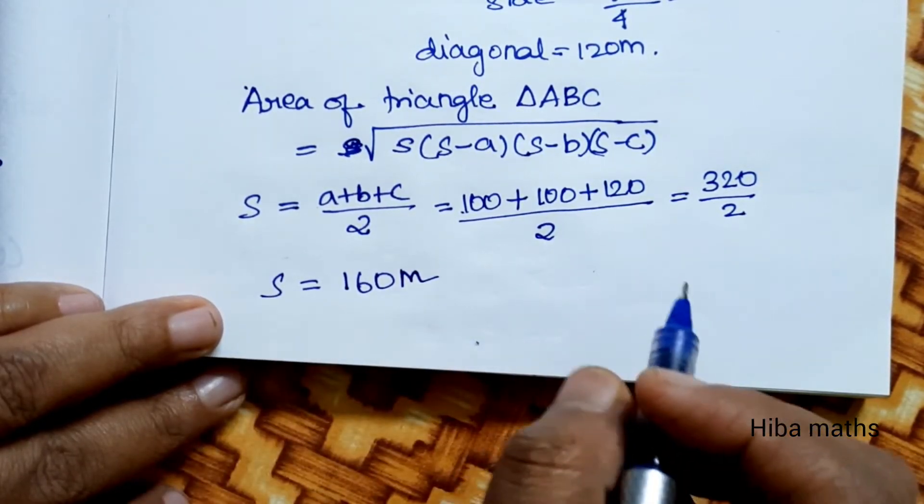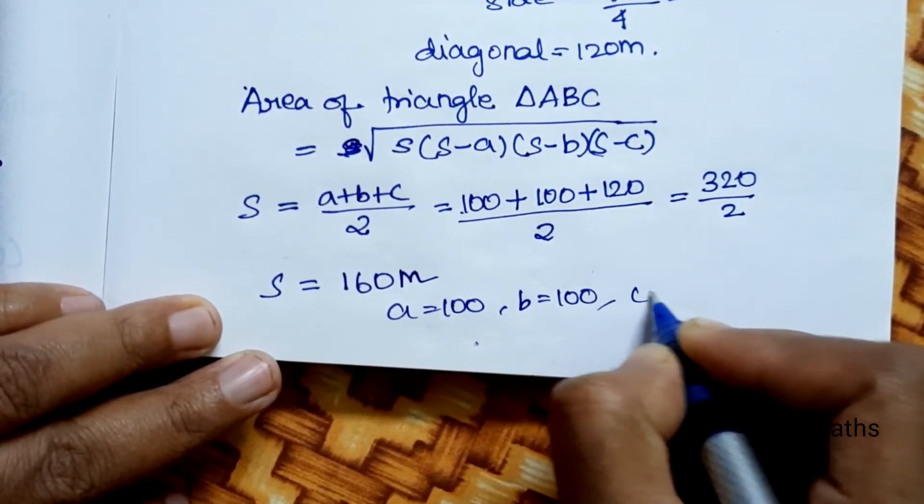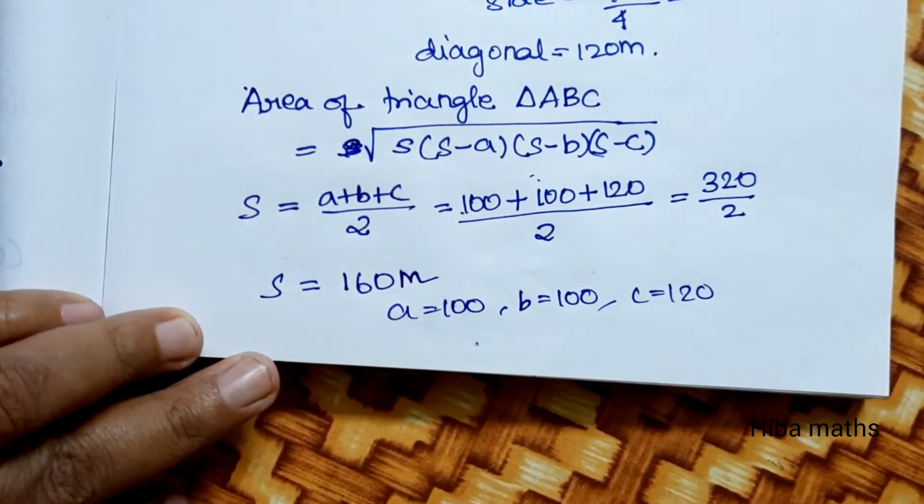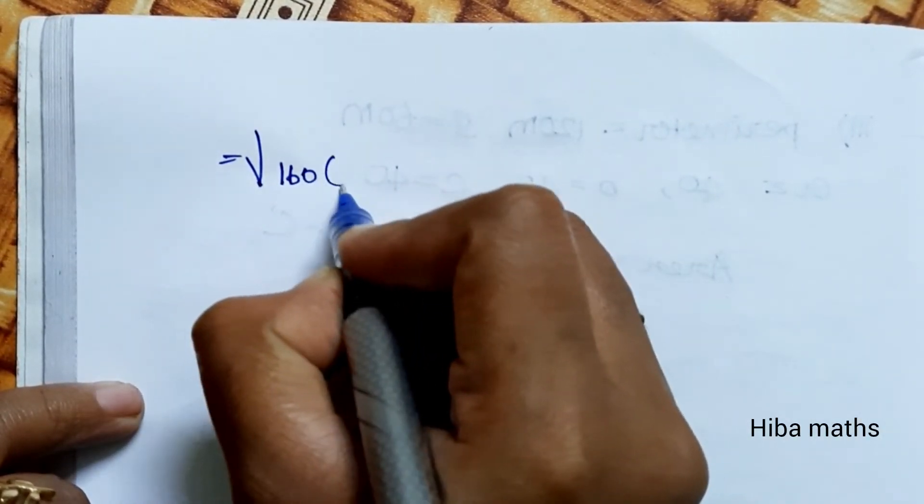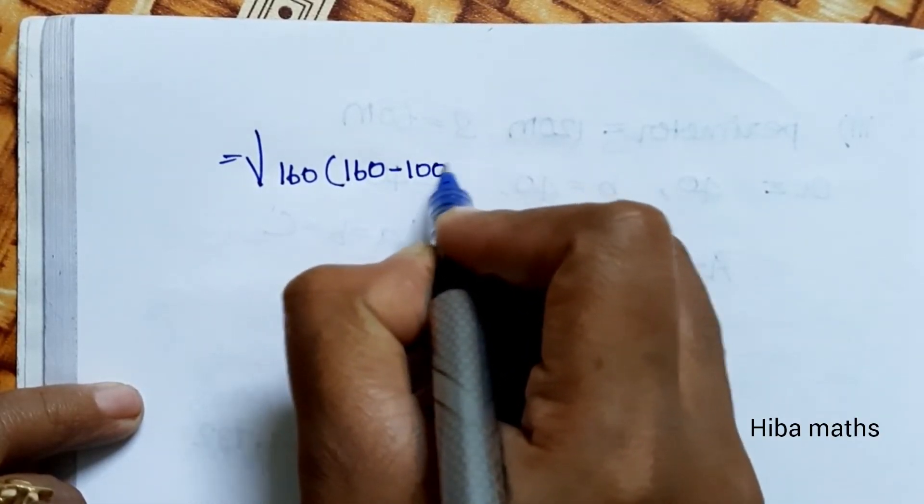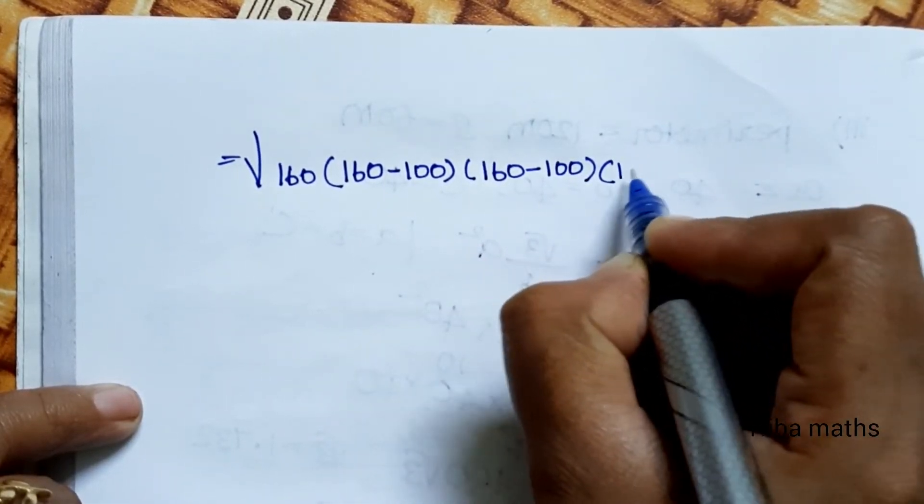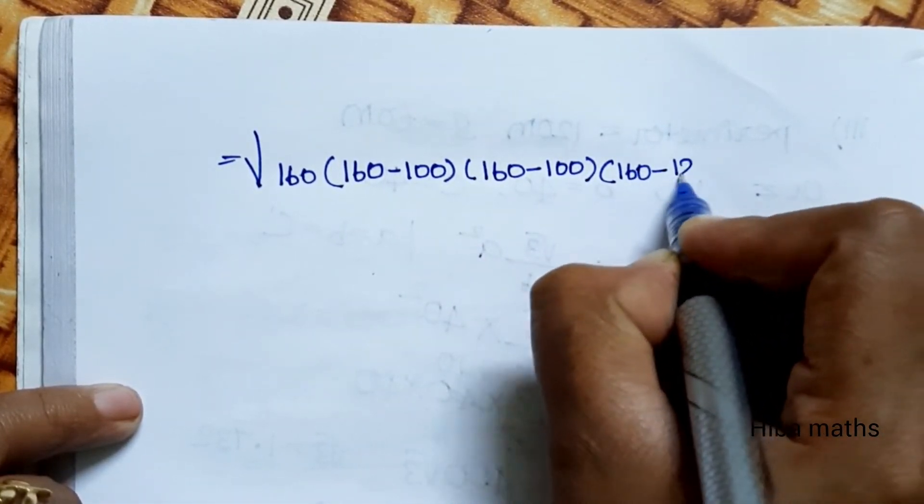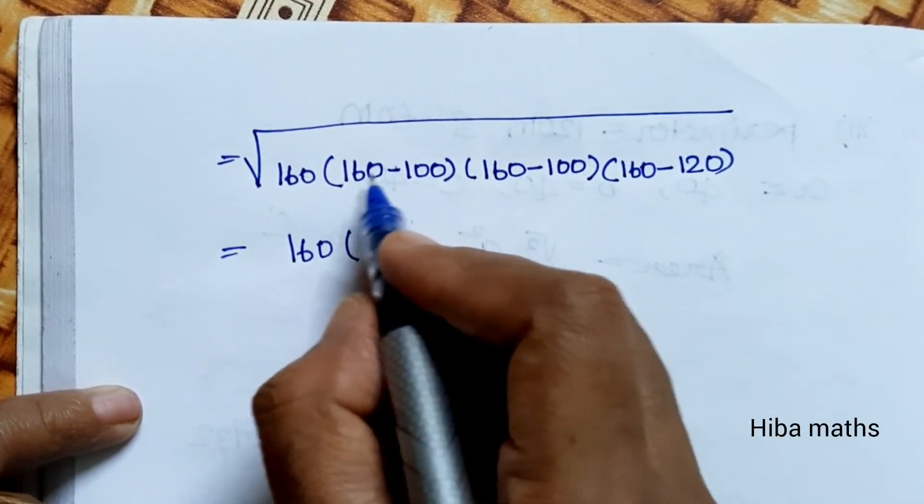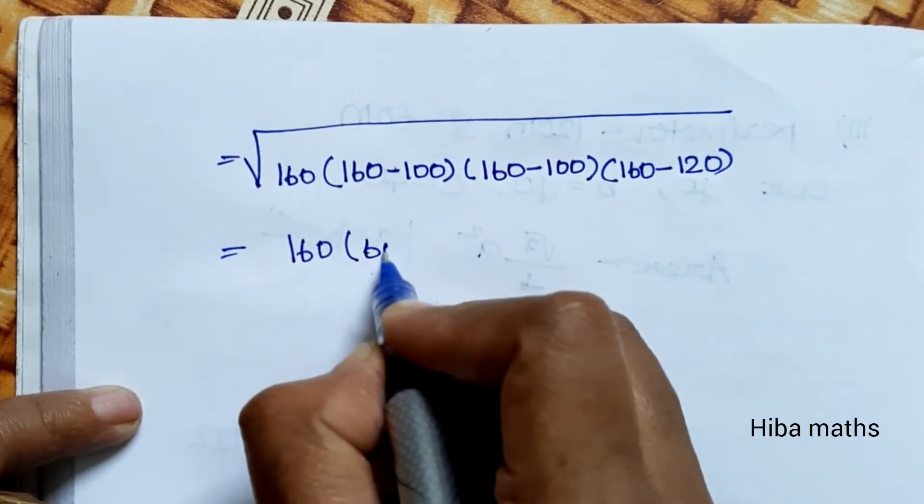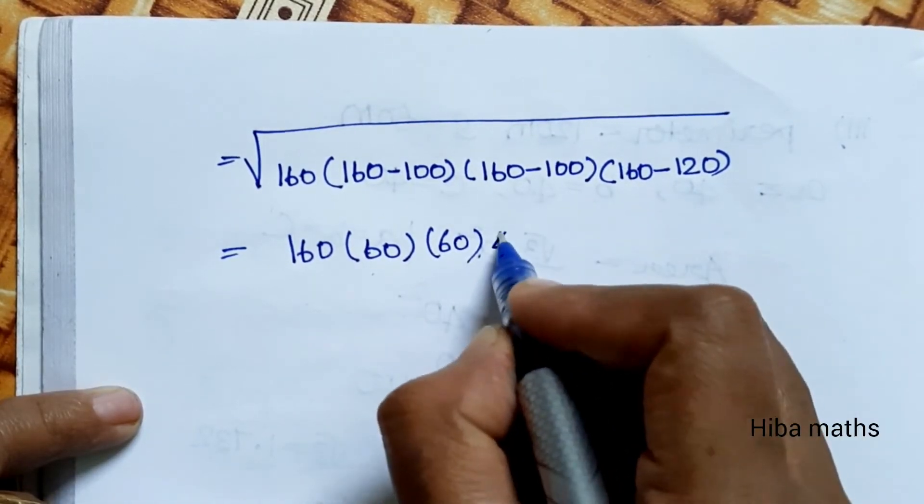Substituting into Heron's formula: square root of 160 times (160 minus 100) times (160 minus 100) times (160 minus 120). That equals square root of 160 times 60 times 60 times 40.